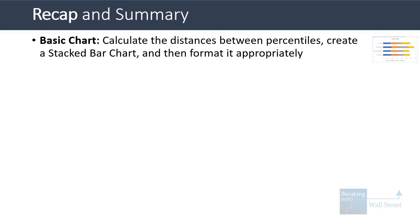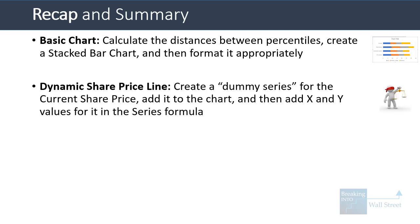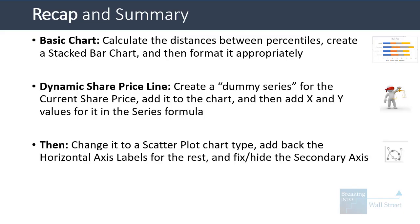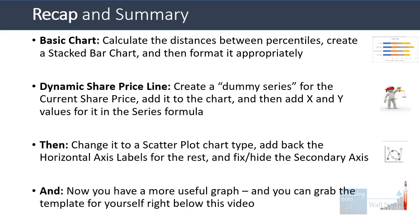Let's do a recap and summary. At a basic level, you start by calculating the distances between percentiles from the output of your valuation methodologies, you create a stacked bar chart for those, and then you format that stacked bar chart appropriately using colors, data labels, changing the fonts, font colors, and so on. To add the dynamic share price line, you have to create a dummy series for the current share price, add it to the chart, then add x and y values for it by manually modifying the series formula in the chart. Then you change it to a scatter plot chart type, add back the horizontal axis labels, fix and hide the secondary axis, and apply other formatting. That's the trick — you're essentially getting Excel to create a type of combo chart that does not exist natively in Excel, but which it does recognize if you set it up correctly and follow the steps in this exact order. Now you have a more useful graph — you can grab the template for yourself right below this video, experiment with it, and then use it in your own valuations.